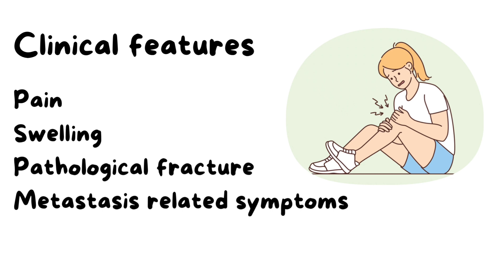Many patients may develop a pathological fracture from very trivial trauma. If the patient develops metastasis, they have symptoms related to the metastasis — for example, cough, chest pain, and hemoptysis are seen in cases of pulmonary metastasis.